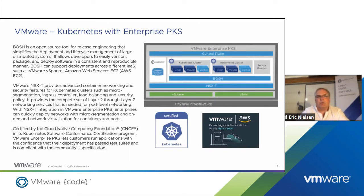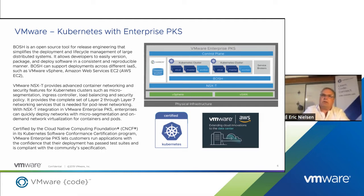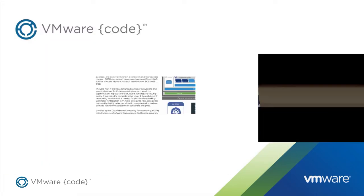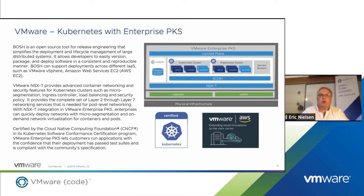VMware has Kubernetes — we used to have Enterprise PKS, and we've rebranded all of this now as Tanzu, a portfolio of products that allow you to deploy Kubernetes. Recently we announced Kubernetes in vSphere — vSphere will actually just run Kubernetes. If you install the right version of vSphere, you'll have Kubernetes embedded in your hypervisor, and you can deploy your Kubernetes workloads right onto vSphere. Playing with the Raspberry Pi should set you up to understand what you'd need to be doing to deploy your workload onto vSphere directly.